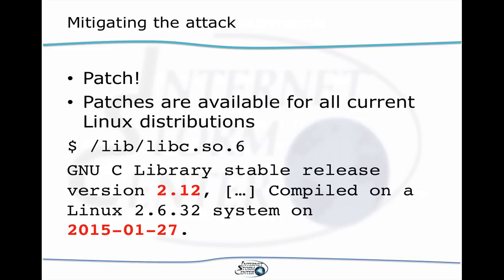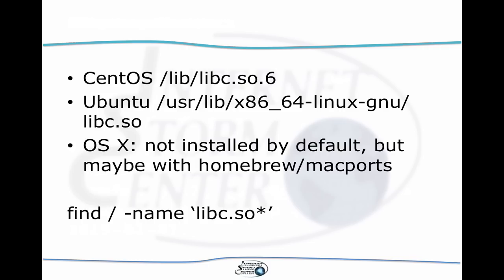The only real mitigation you have is to patch — that's really the important part. You have to patch quickly. Where do you find this library on CentOS, Ubuntu, or OS X? It depends a bit. You can use the find command to search for libc.so — not necessarily libc.so.6 specifically. You may find a couple of instances of that filename, but they tend to be symlinks to the actual location of the glibc library.